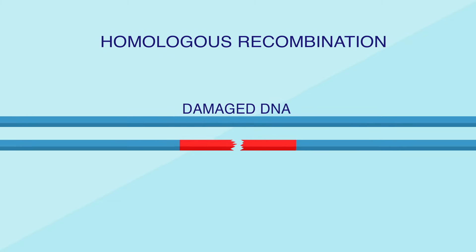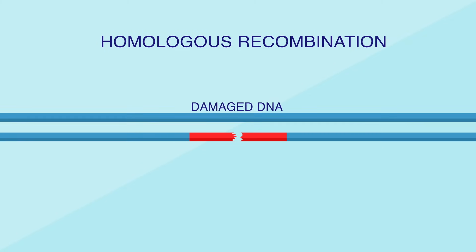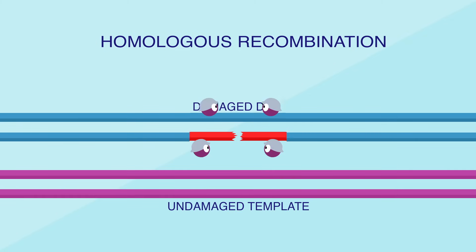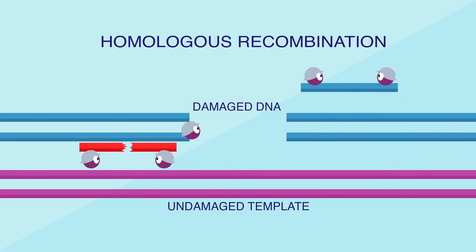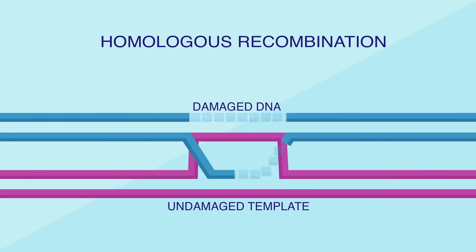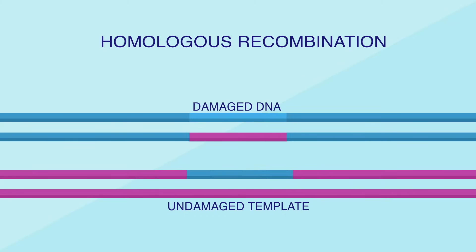The two most common pathways for repairing double strand breaks are called homologous recombination and non-homologous end-joining. Homologous recombination uses an undamaged section of similar DNA as a template. Enzymes interlace the damaged and undamaged strands, get them to exchange sequences of nucleotides, and finally fill in the missing gaps to end up with two complete double-stranded segments.